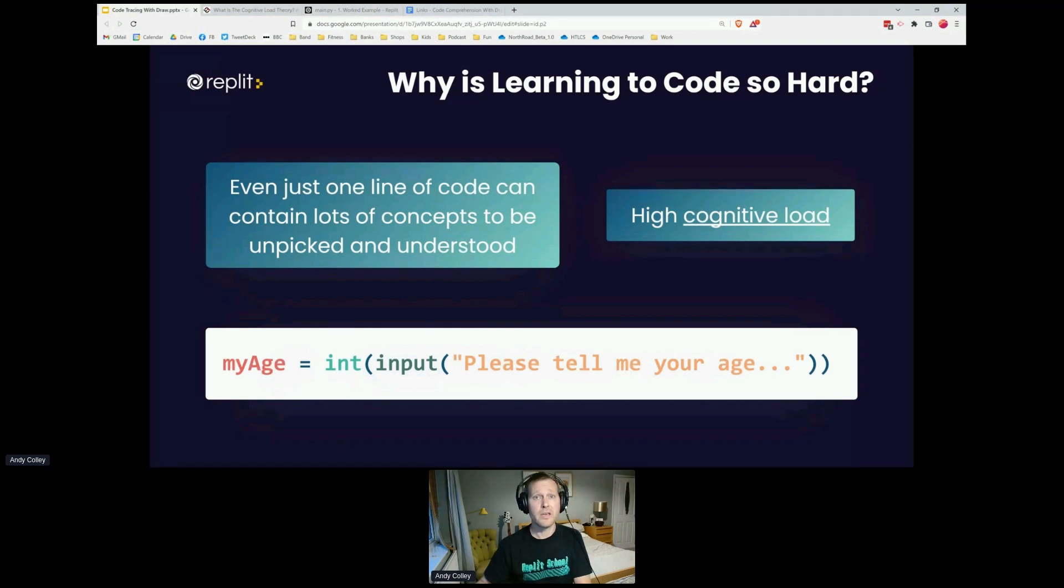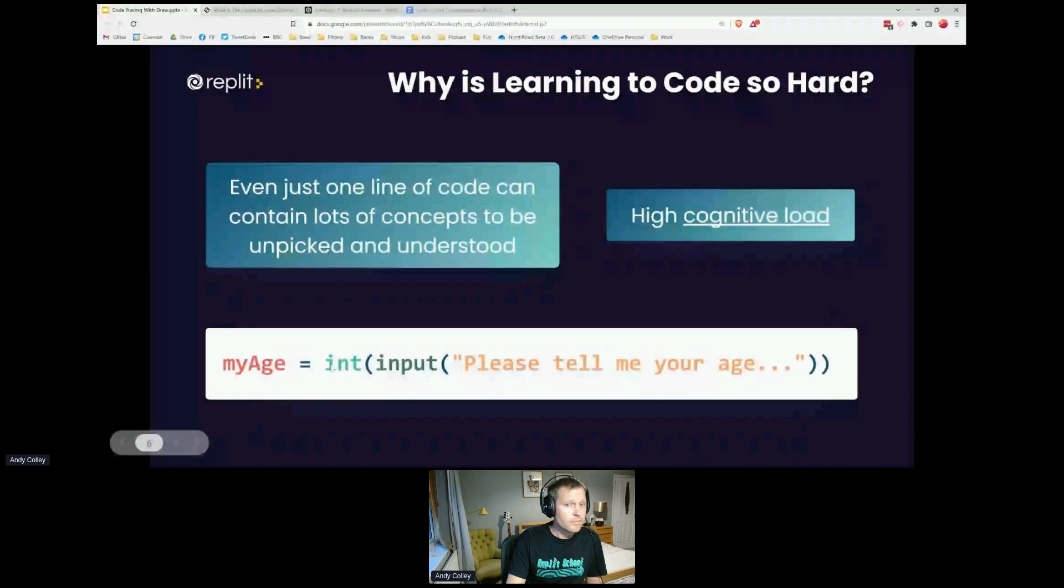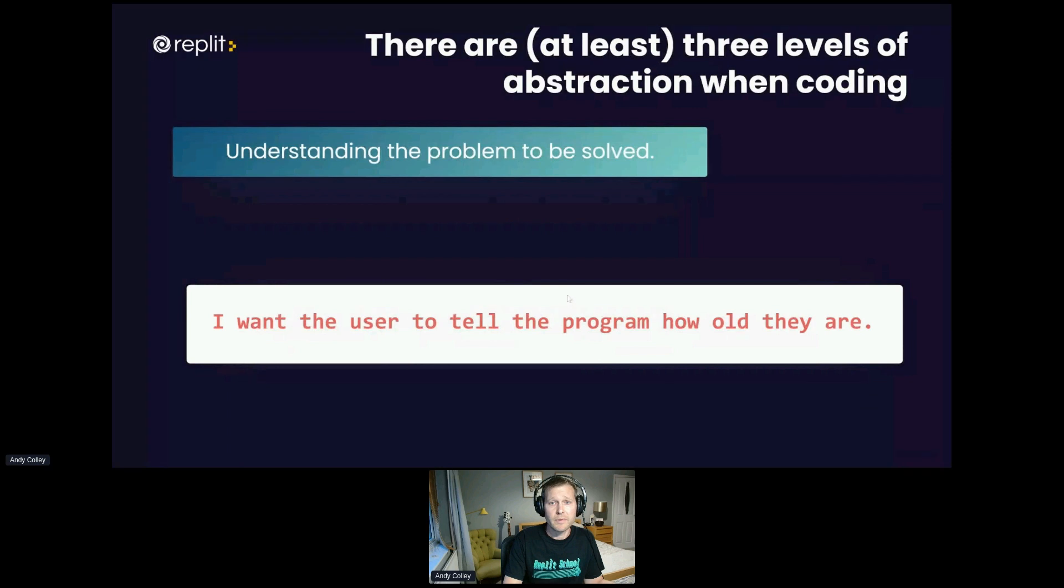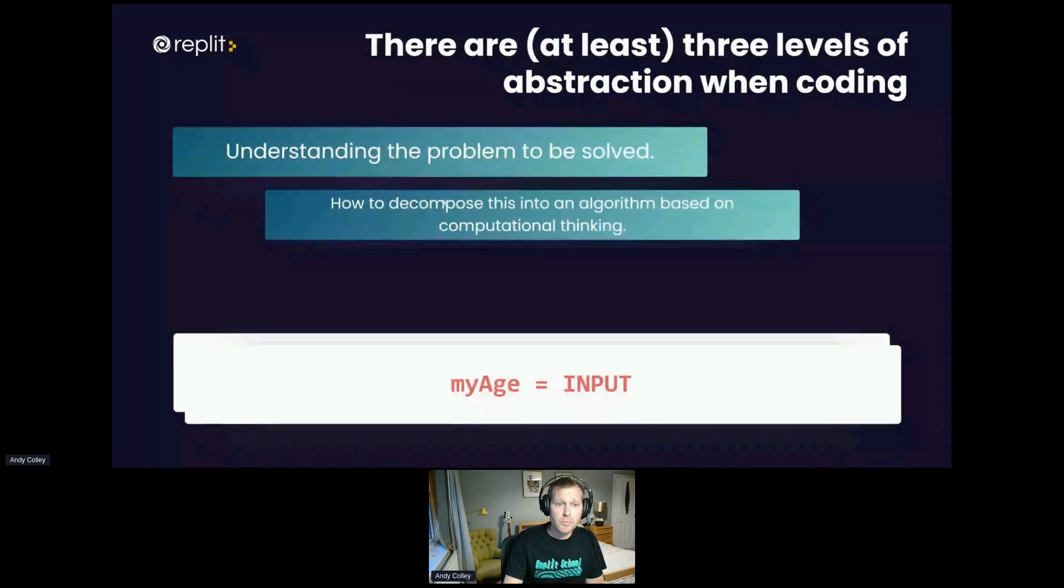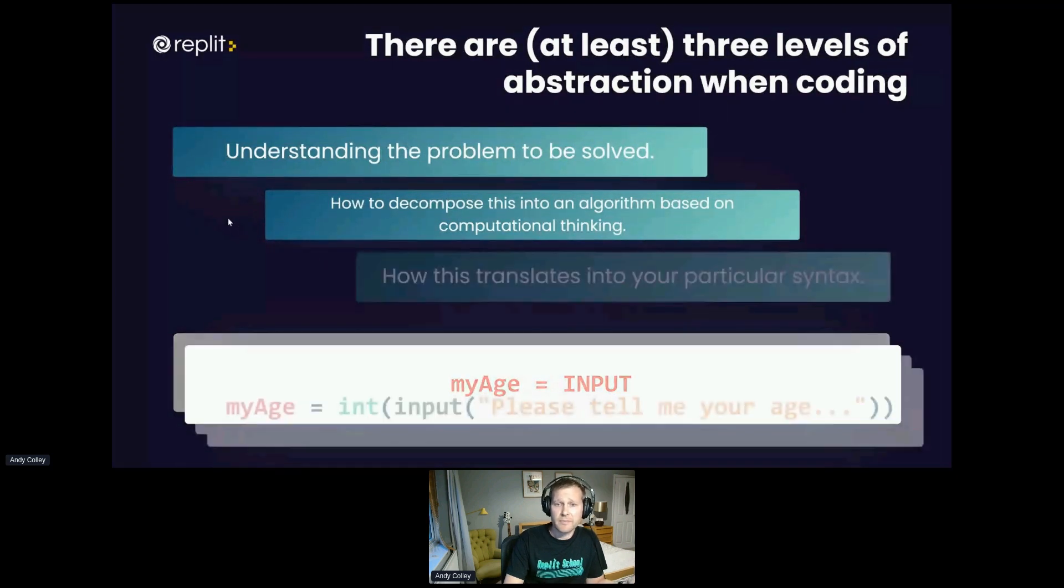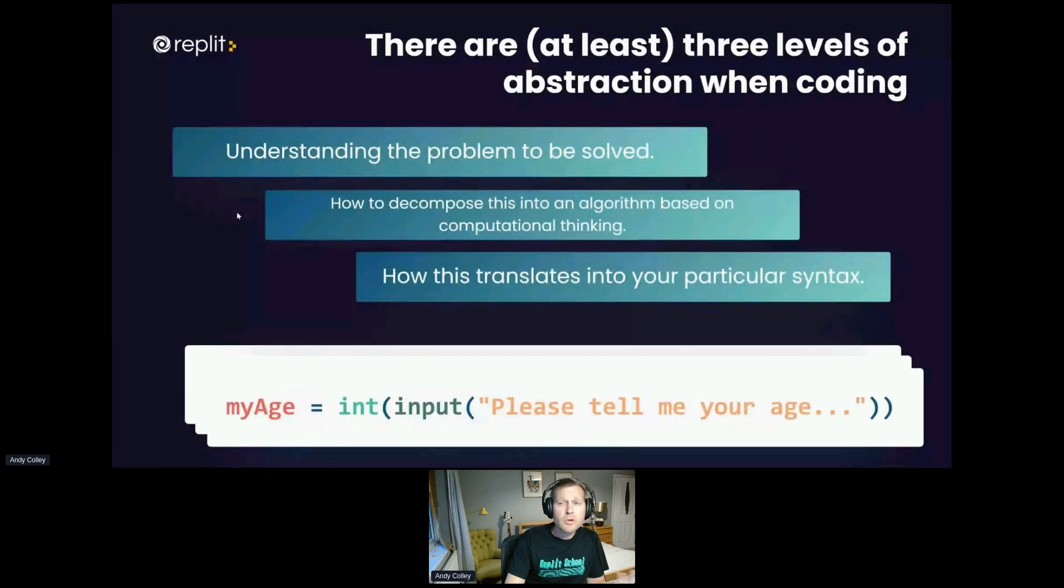We cannot rush this. We've got to take the time to make sure our students have unpacked these concepts and understand them. Crucially, I need information from them that convinces me they have learned what I'm trying to teach. In code, first we've got to understand the problem to be solved, then put that into computational thinking. This is where my students struggle the most: moving from "this is what I want the computer to do" to breaking it down into an algorithm. Then finally there's the syntax. Code comprehension provides scaffolding to help students understand problems and look at examples before they write their own code.